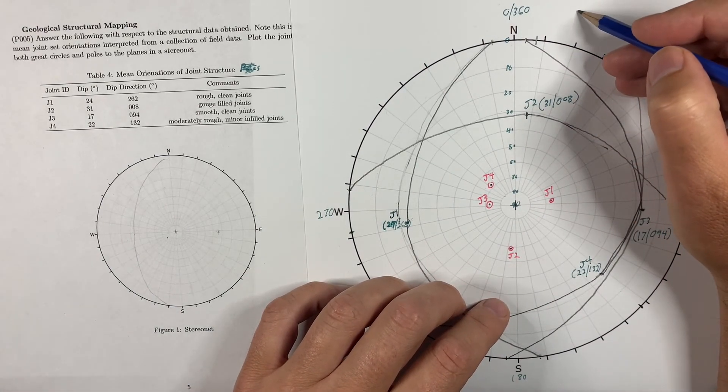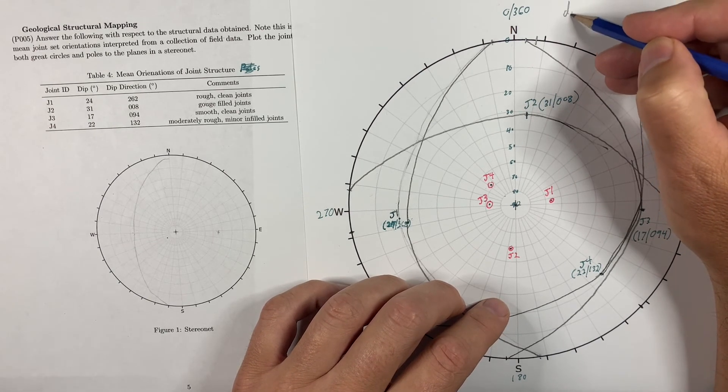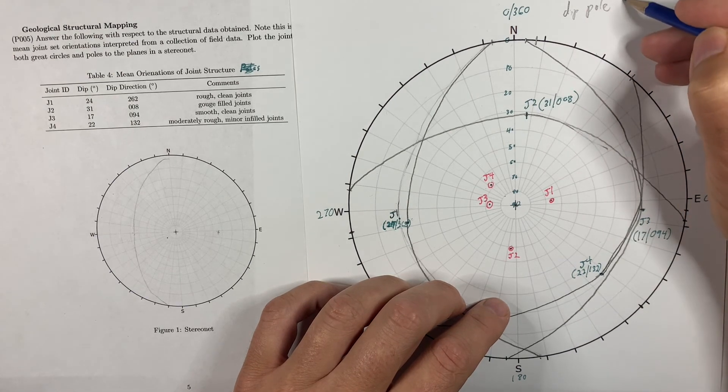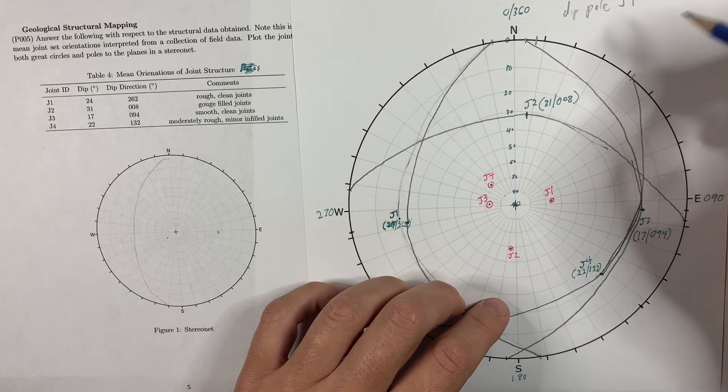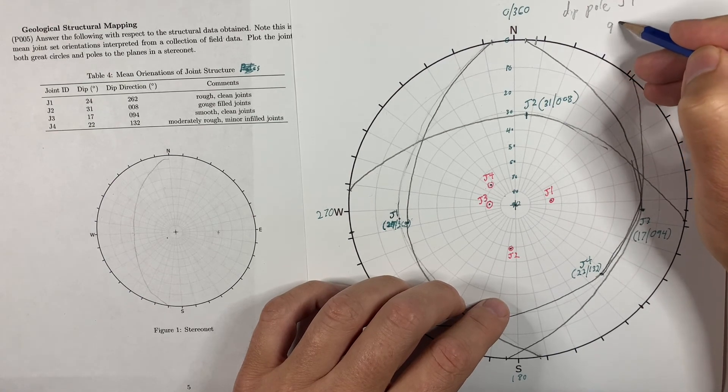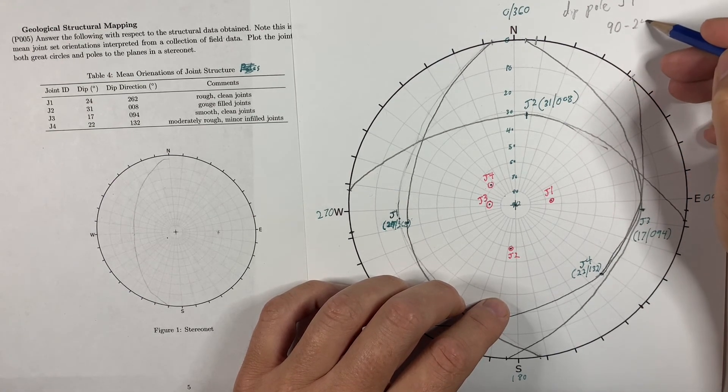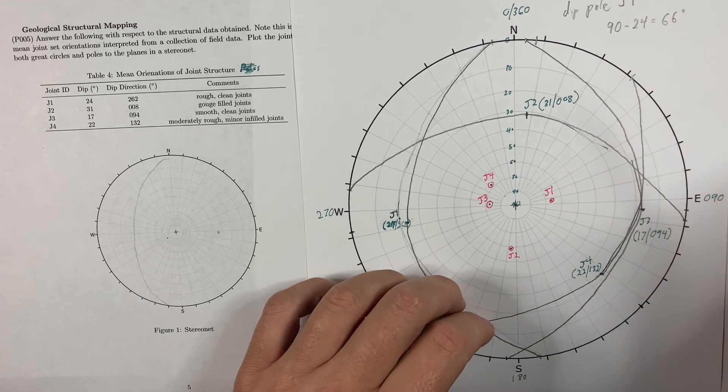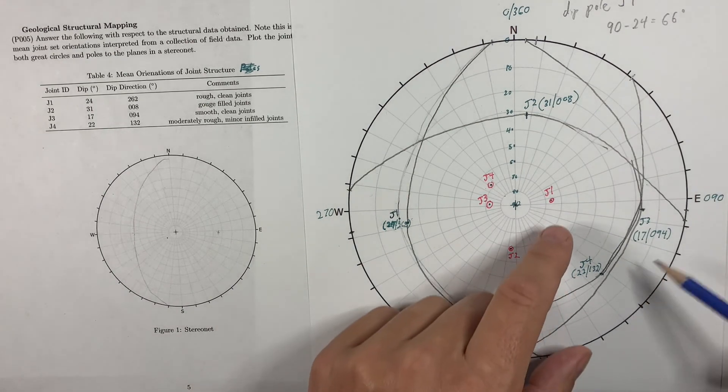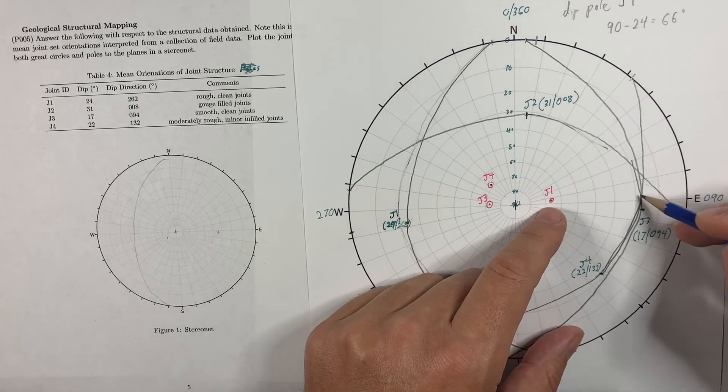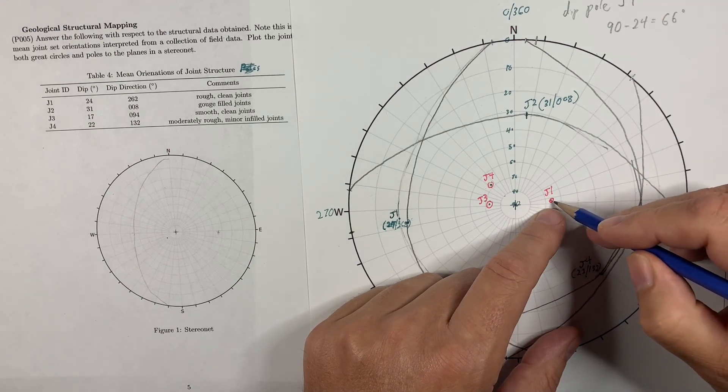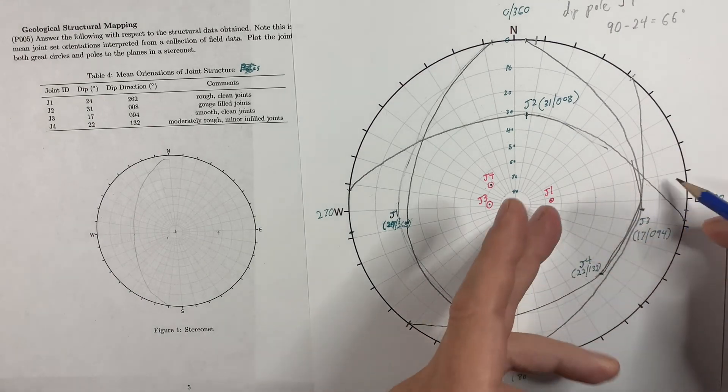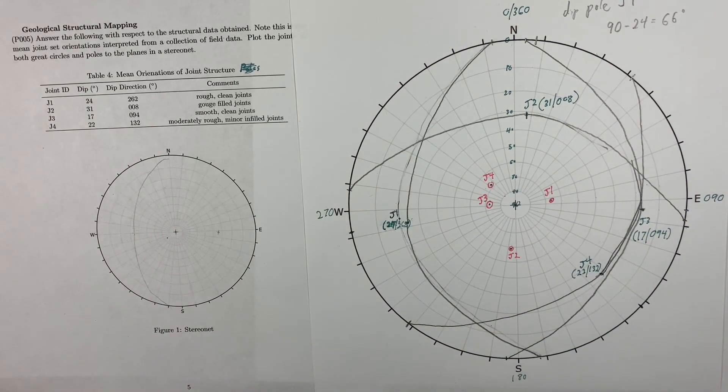Let me sort of show this as a calculation of the normal way to do it. If you were going to look at the dip of the pole for J1, 90 degrees minus 24 degrees is 66 degrees. So J1, 10, 20, 30, 40, 50, 60, 66 degrees, right? Or you could count 24 up and it accomplishes the exact same thing.